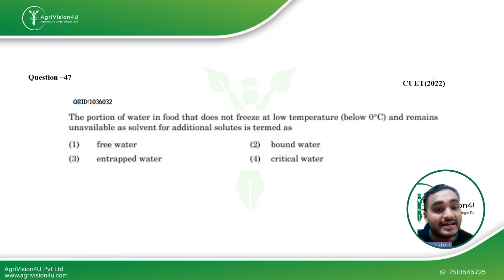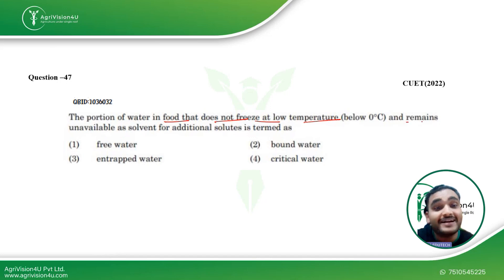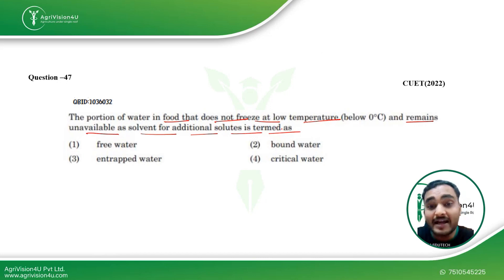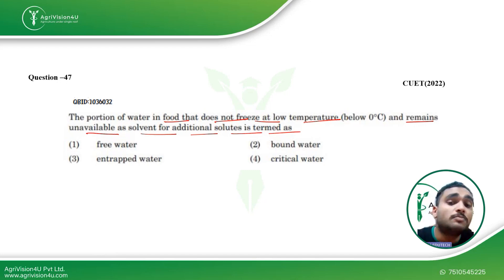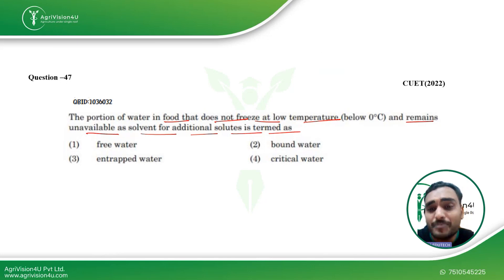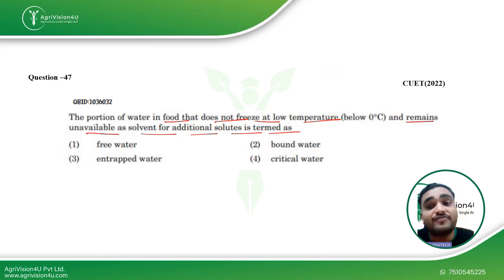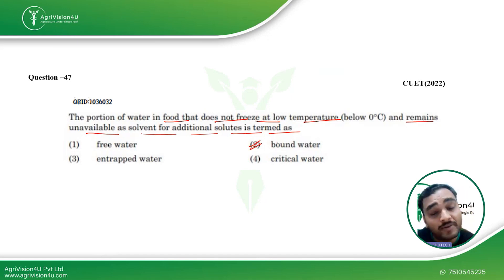Coming to the next question: the portion of water in food that does not freeze at low temperature and remains unavailable as a solvent for additional solutes is termed as — this relates to water activity discussed in the last video. Free water is available for microbial activity and is not bound to any chemical or physical constituent inside food. Bound water is that water which remains available even after freezing for solute dissolution. Free water, being pure water, will directly convert to solid state at low temperature.